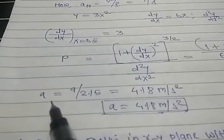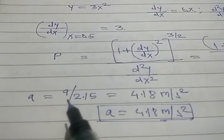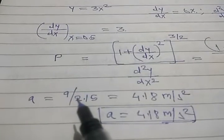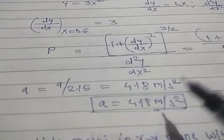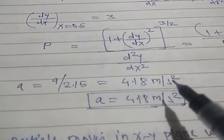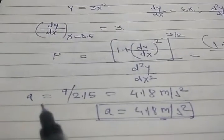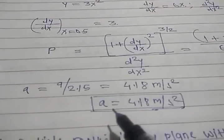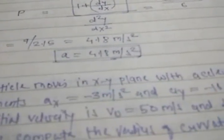So a equals v²/ρ. v is 3, so v² is 9. Therefore 9 divided by 2.15 gives 4.18 meters per second squared. Since aₜ equals 0, the total acceleration a equals aₙ, so total a equals 4.18 meters per second squared.